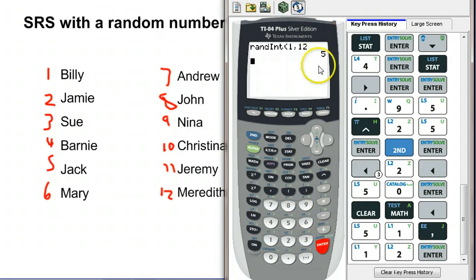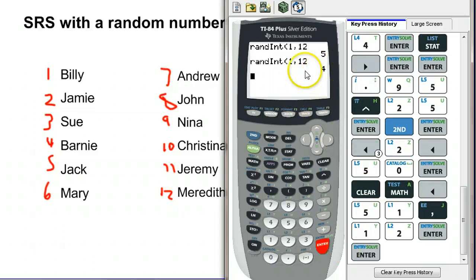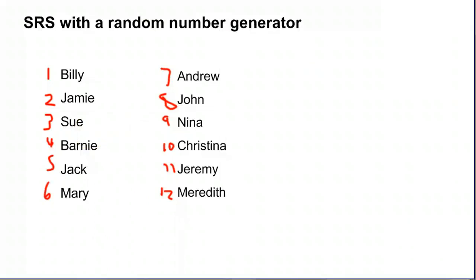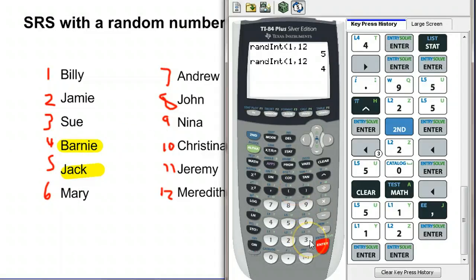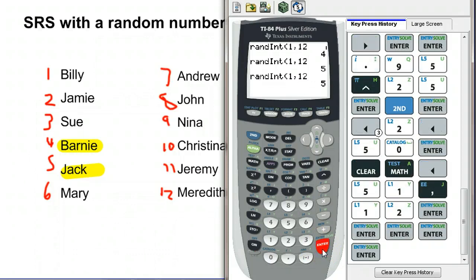5. So by randomly generating a 5, that means that I'm going to choose Jack to be in my random sample. Let's say I want to get 5 people. So let's hit it again. If I just hit enter, I don't have to retype all that. I get 4. So now I have Barney. So I have Jack and Barney selected for my random sample. So I'll just highlight them as we go. Hit enter again. 5. Ooh. I already selected Jack. Whenever you get repeats from a random number generator, that's something that you can just skip. So I'm going to skip that number because I already have Jack selected. Can't select him twice.